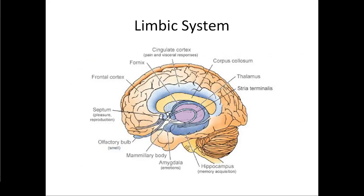Looking at the limbic system as a whole: the amygdala handles emotions, particularly negative emotions like fear. The septum is important for pleasure and reproduction. The cingulate cortex is important for pain and visceral responses. And you'll also notice the hippocampus here in the limbic system, closely connected to that amygdala.